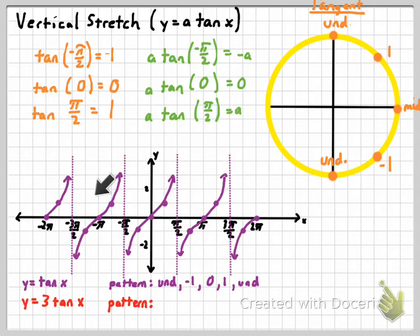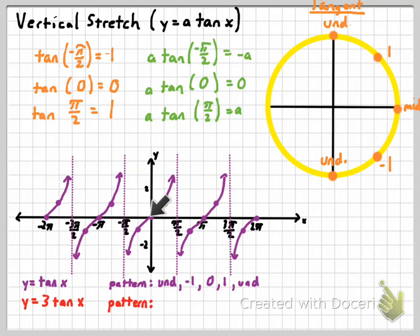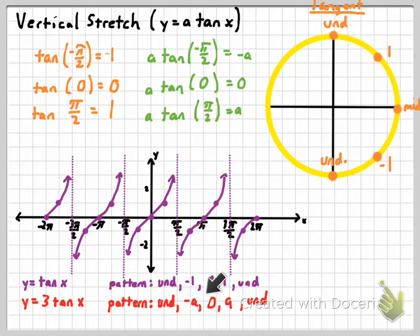Whereas with the basic tangent function, the pattern goes: undefined at the asymptote, then negative 1, 0, 1, then another asymptote. What we're going to do whenever we have an a — multiplying the tangent by something — is we're still going to have undefined values and 0 in the same places, but instead of negative 1 and positive 1, we're going to get negative a and positive a. So in this case where a is 3, our pattern is going to be negative 3, 0, and 3 in between the asymptotes.